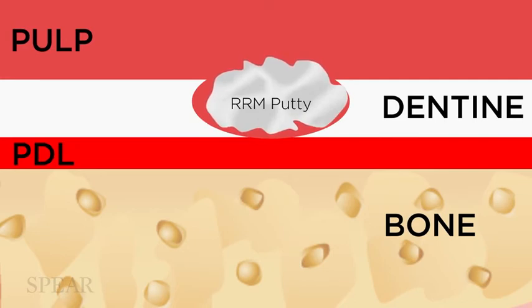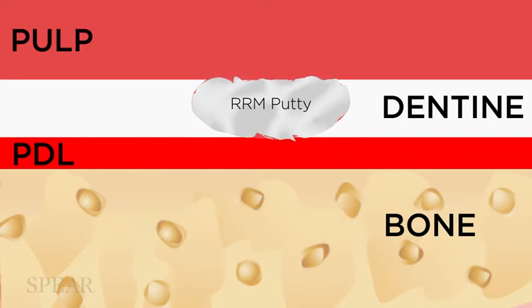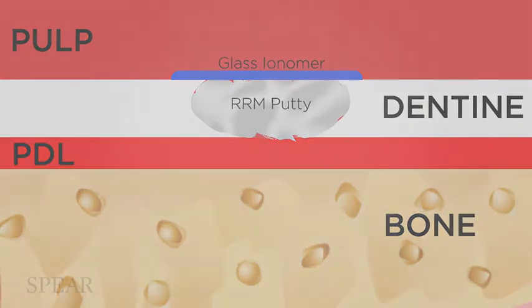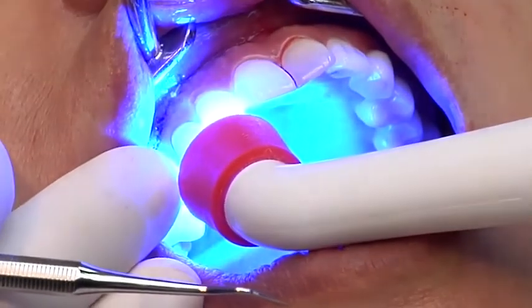Now you have an interface area where the material sets in about 20 minutes, but I generally don't want to wait that long. What I do is put a liner right on top of it — a compatible, bioactive liner, such as glass ionomer or a bioceramic-based liner — and then light cure it. Then I'm ready to go. The surface is dry and I can now find the canal or proceed with what I need to do without fear of this material washing out.